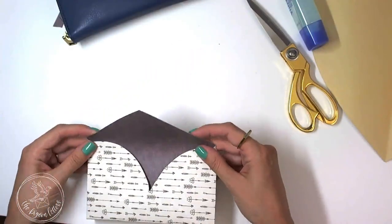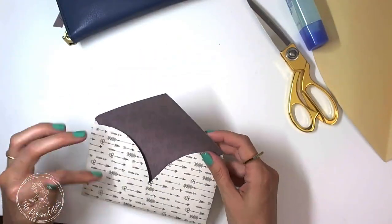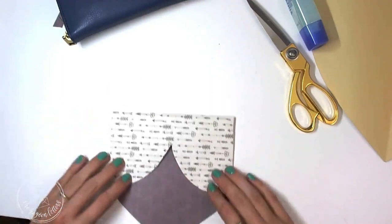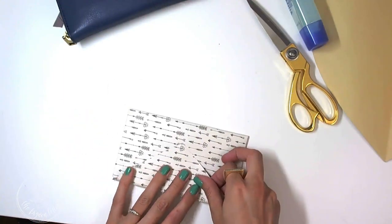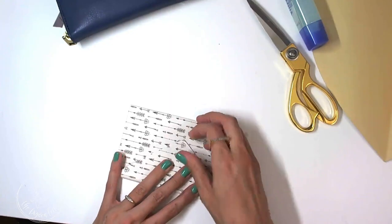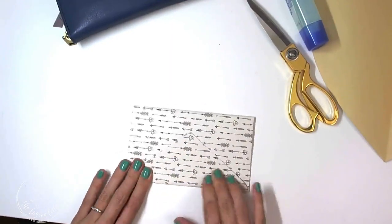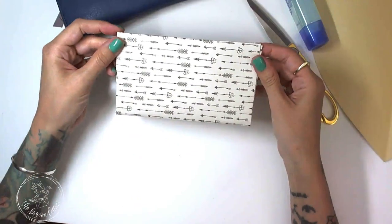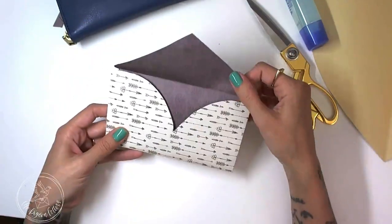Once that's dry, we're going to flip the top part over. So you're going to crease it at the top of that beginning heart like so. And then you have your envelope and that's it.